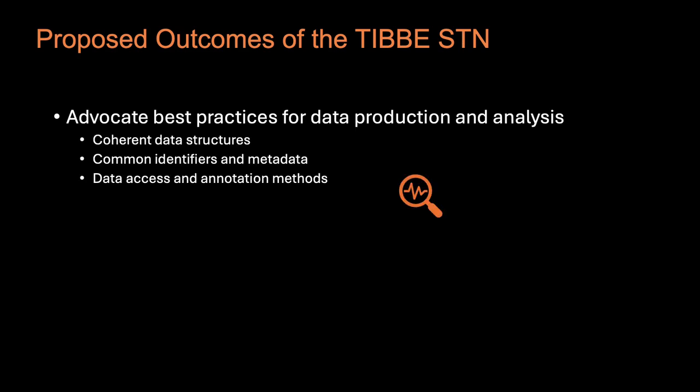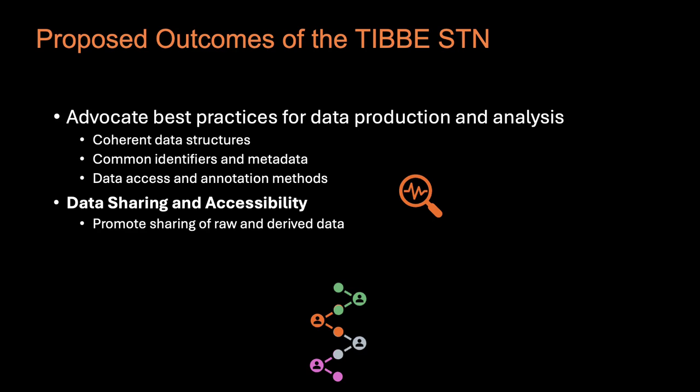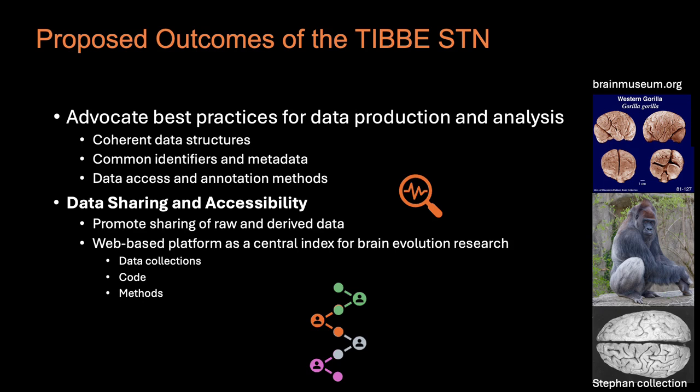We will advocate for best practices for data production and analysis, for coherent data structures, common identifiers, and effective methods for data access and annotation in brain evolution research. We will promote sharing of raw and derived data through a web-based platform, which serves as a central index for data collection important to brain evolution research, as well as code and methods, and will enhance accessibility and collaboration in the field.